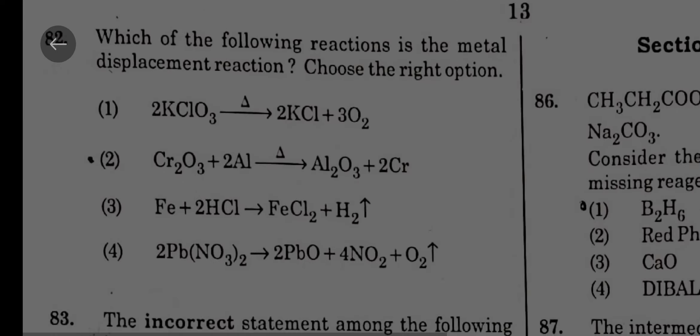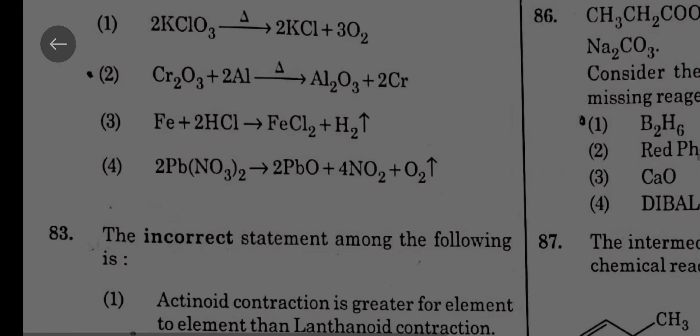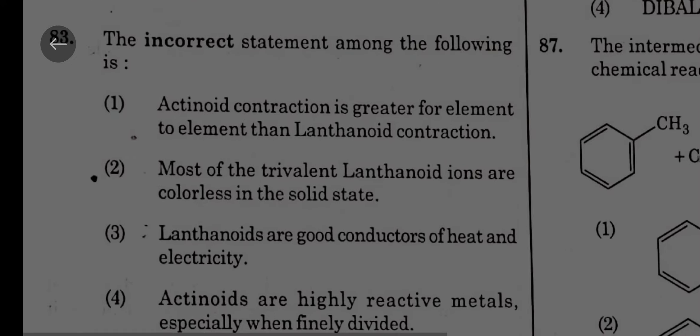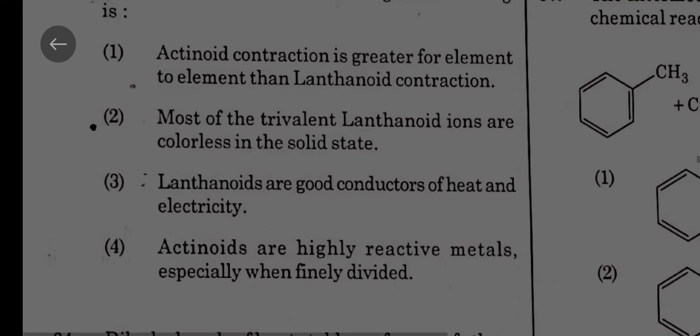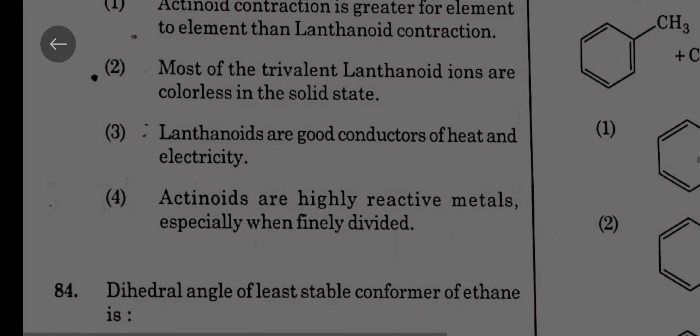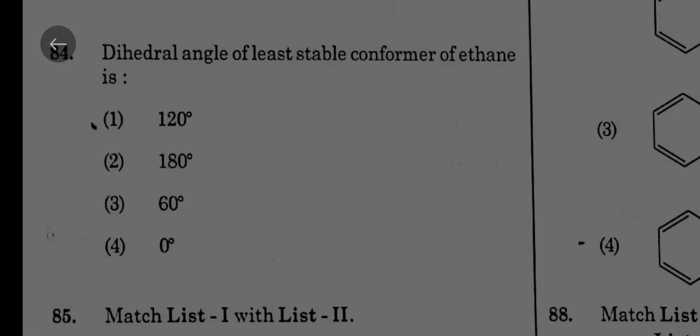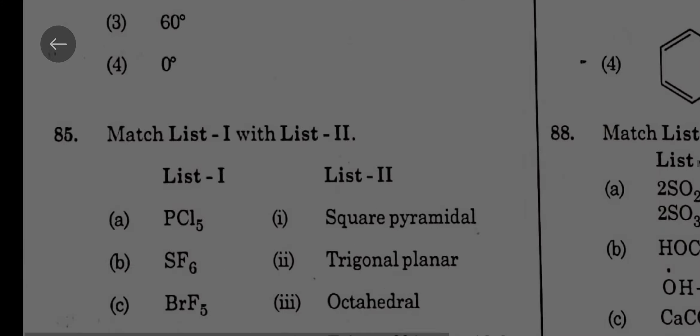Which of the following reactions is the metal displacement reaction? Direct question: Cr2O3 plus 2Al gives Al2O3 plus 2Cr. The incorrect statement among the following is most of the trivalent lanthanide ions are colored. This is NCERT direct statement question. Dihedral angle of least stable conformer: least stable conformer means one behind another, so zero degree.